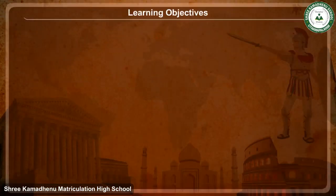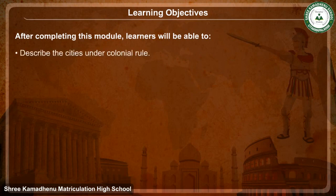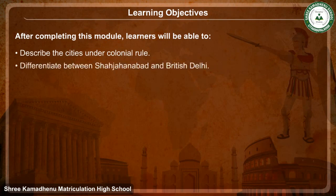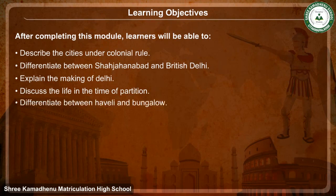Learning Objectives: After completing this module, learners will be able to describe the cities under colonial rule, differentiate between Shahjahabad and British Delhi, explain the making of Delhi, discuss the life in the time of partition, differentiate between Haveli and Bungalow, and enlist the reasons for the decline of Havelis.